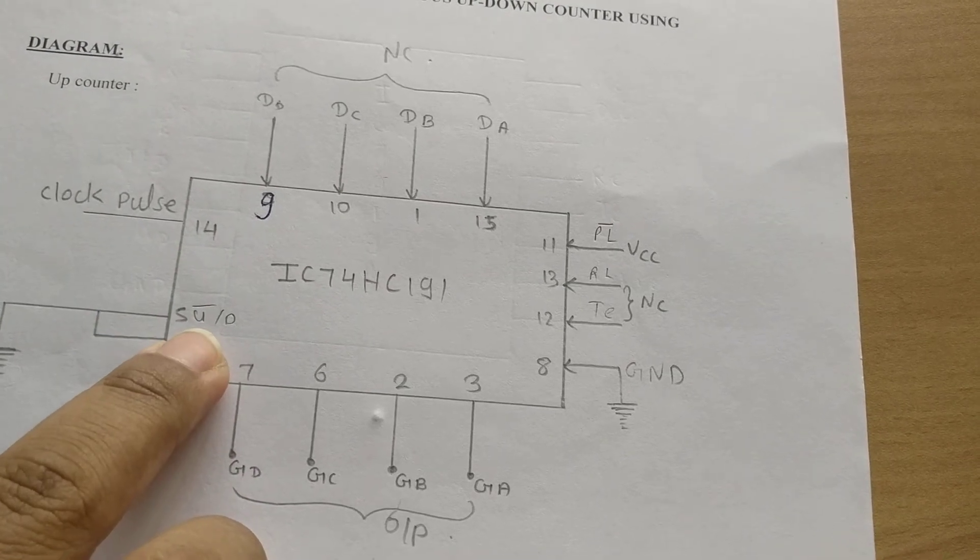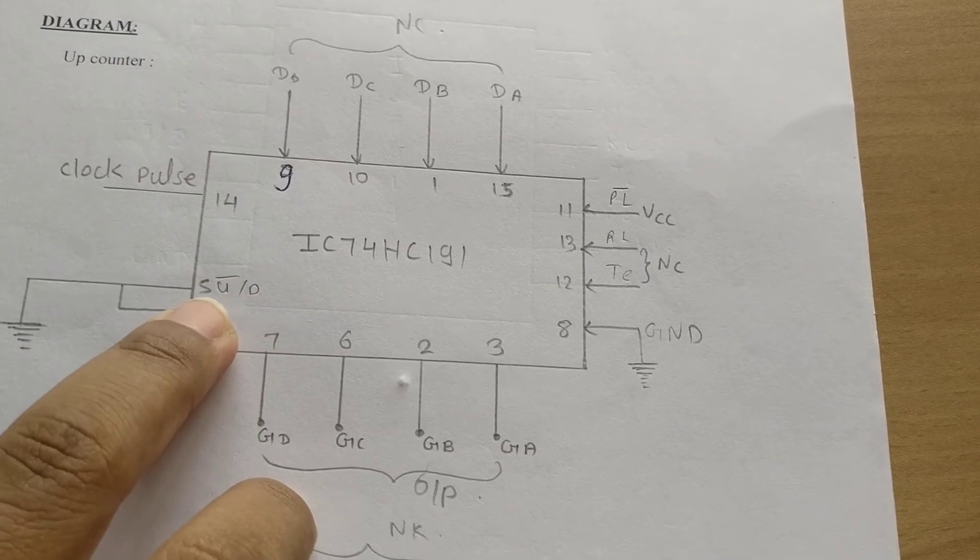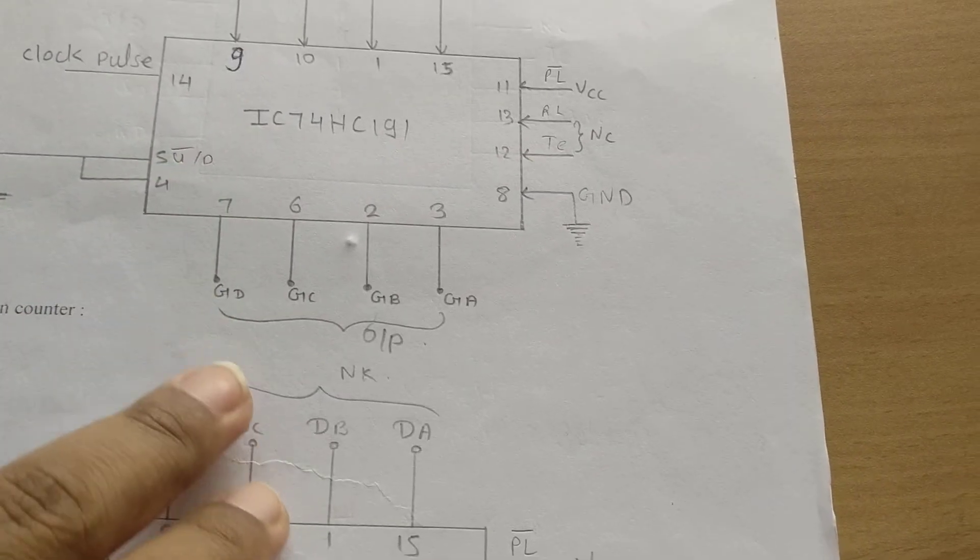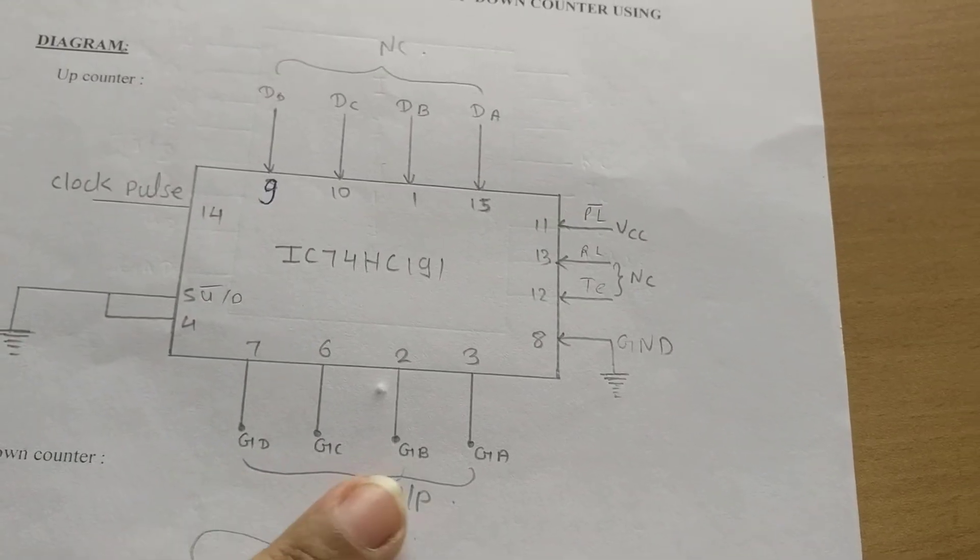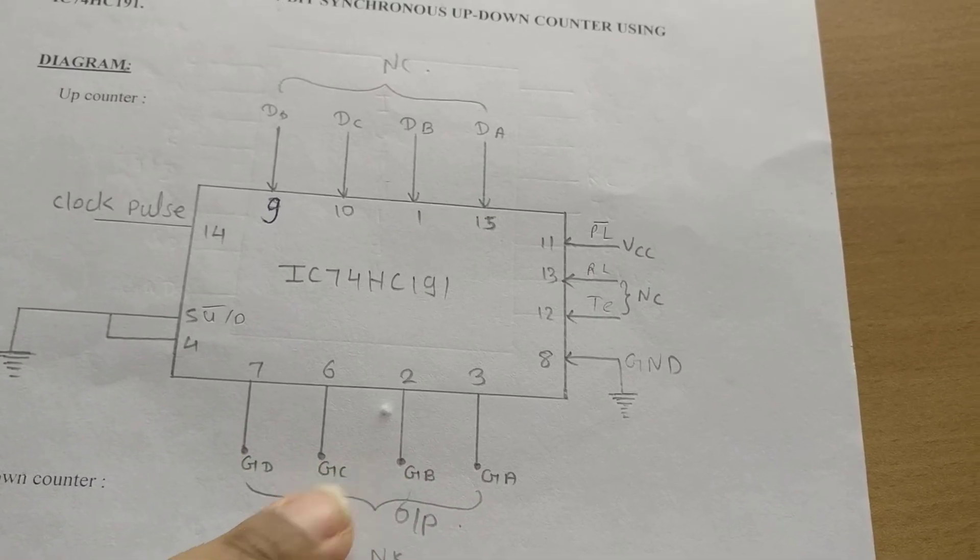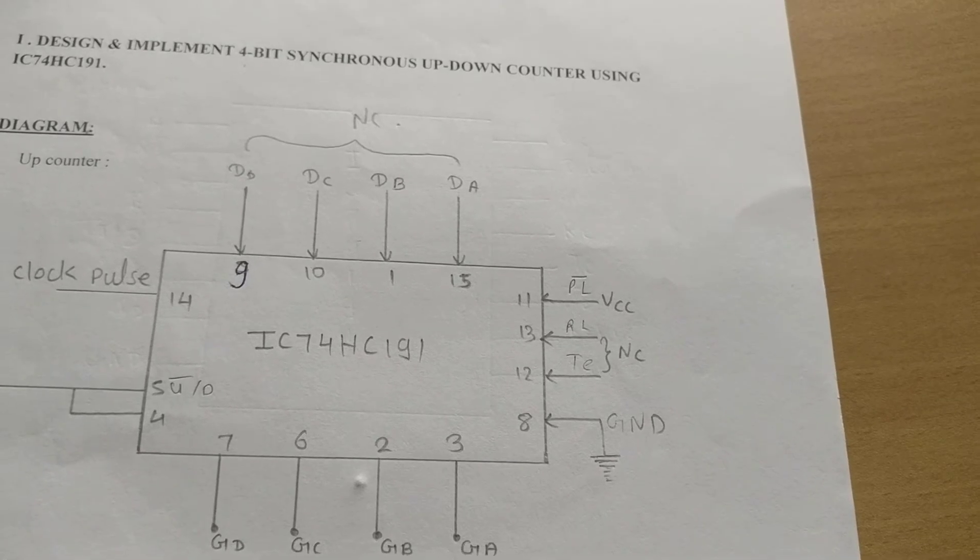Pin number 5 is connected to ground as we want it as an up-counter. When pin number 5 is connected to ground, it will be active and work as an up-counter. When you connect QA, QB, QC, QD to the output pins, you will see that the output is going from 0000 up to 1111. That is, it will be an up-counter.